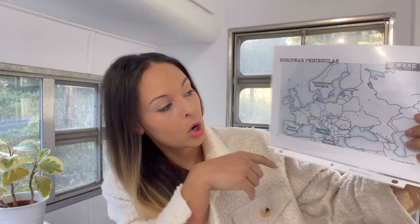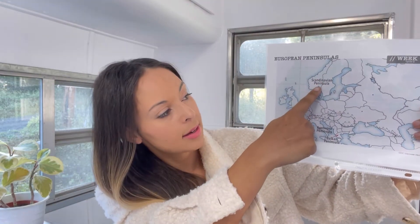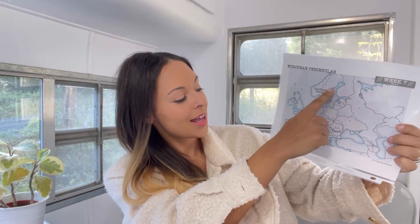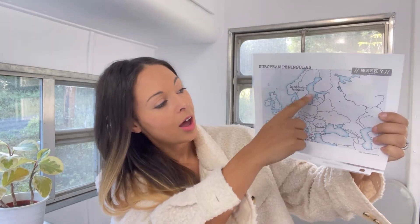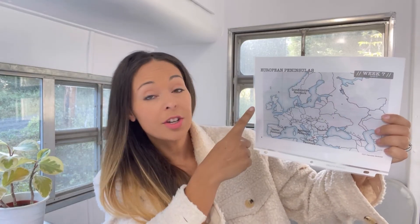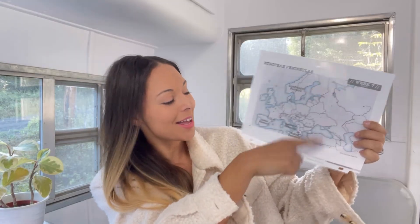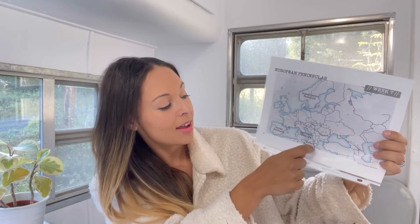For geography, we are learning about all of the European peninsulas, and I thought it would be fitting to sing this to the tune of Down by the Bay because we're talking about waters. I'm changing the order just a little bit to flow well — we'll start with the Scandinavian peninsula, go down to the Iberian, then the Apennine, and then over to the Balkan. Scandinavian, Iberian, Apennine, Balkan peninsula — all surrounded by water on three sides. These are four European peninsulas.